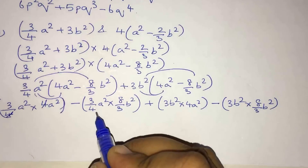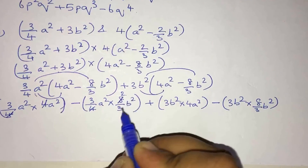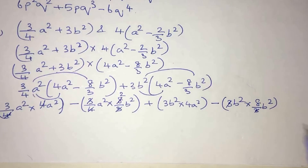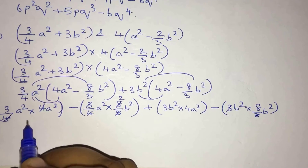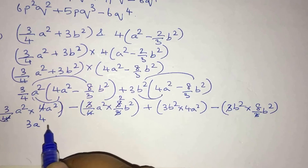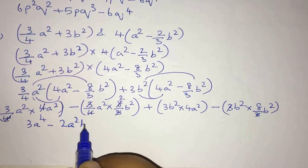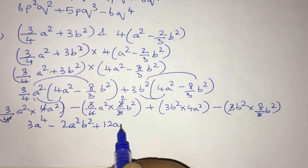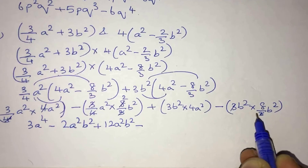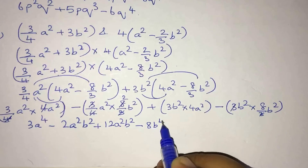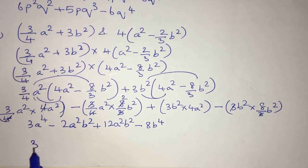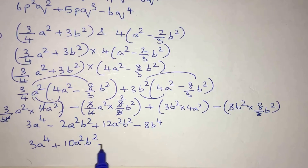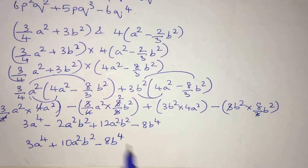Simplifying: the 4s and 3s cancel where applicable. So we get 3a⁴, and combining -2a²b² plus 12a²b² gives +10a²b², minus 8b⁴. The final answer is 3a⁴ + 10a²b² - 8b⁴.